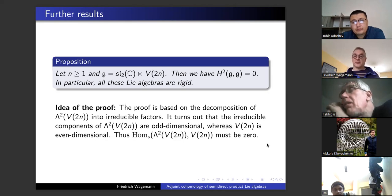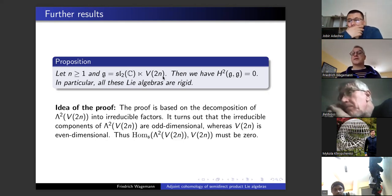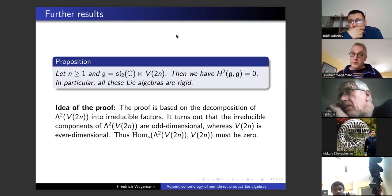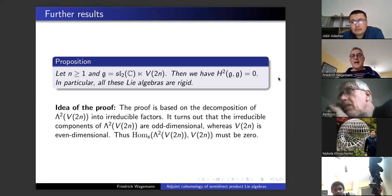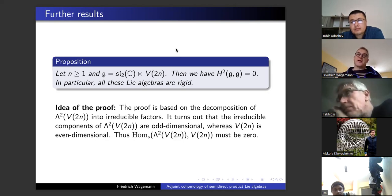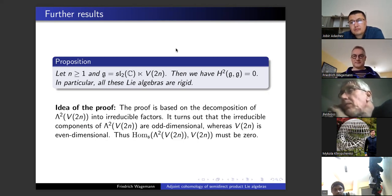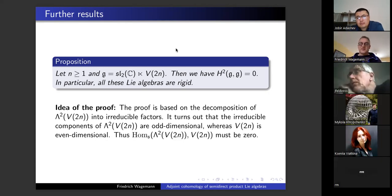One pattern we can show: when you take an even-dimensional irreducible module and form sl2 semi-direct product with it, H2 is always zero — all these Lie algebras are rigid. To show this you need the decomposition of Λ^2 of the module into irreducible factors; all irreducible components are odd-dimensional and the spaces which would contribute must be zero. For the odd-dimensional modules, Richardson already knew there is a non-trivial H2, and we would like to compute it explicitly for all odd-dimensional modules, though we do not yet know the general answer.